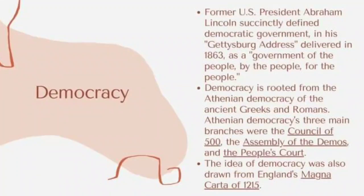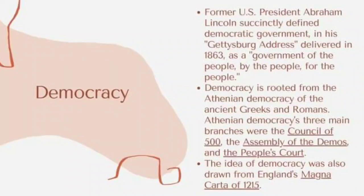Democracy is rooted from the Athenian democracy of the ancient Greeks and Romans. Athenian democracy's three main branches were the Council of 500, the Assembly of the Demos, and the People's Court. The Council of 500, also known as the Boule, consisted of 500 men — 50 from each of the 10 Athenian tribes — who served on the council for one year. The Assembly of the Demos, also known as the Ecclesia, was held 40 times per year and served as the sovereign governing body of Athens. The last branch is the People's Court, or the Dikasteria, which was the third important branch in Athenian democracy.